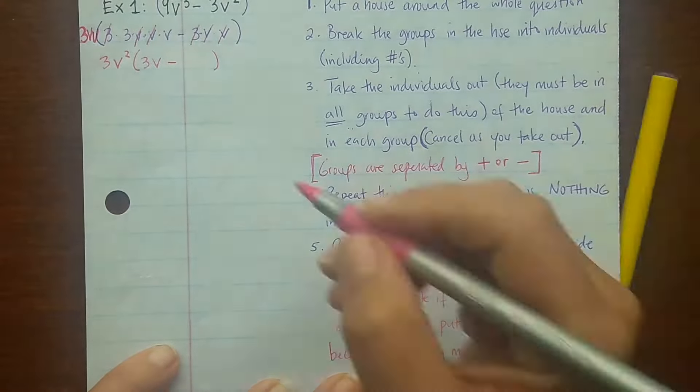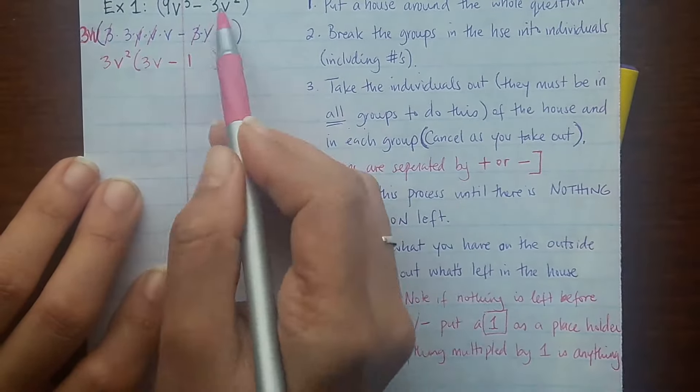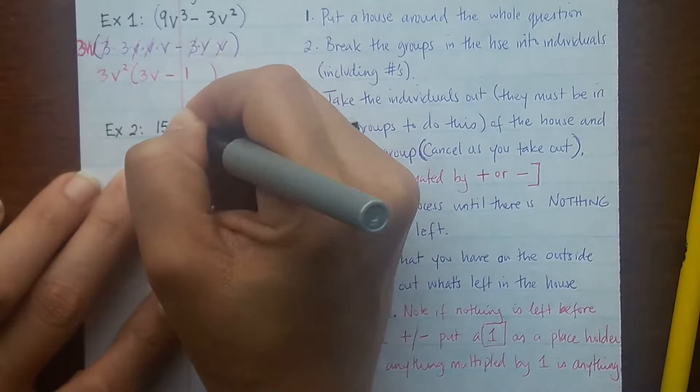Because anything multiplied by 1 is that same anything. Now if you don't put that 1 there you're going to be wrong. So I need that 1 there because when I multiply it back out it's going to give me that 3v² at the end. Without that 1 it wouldn't give me that.